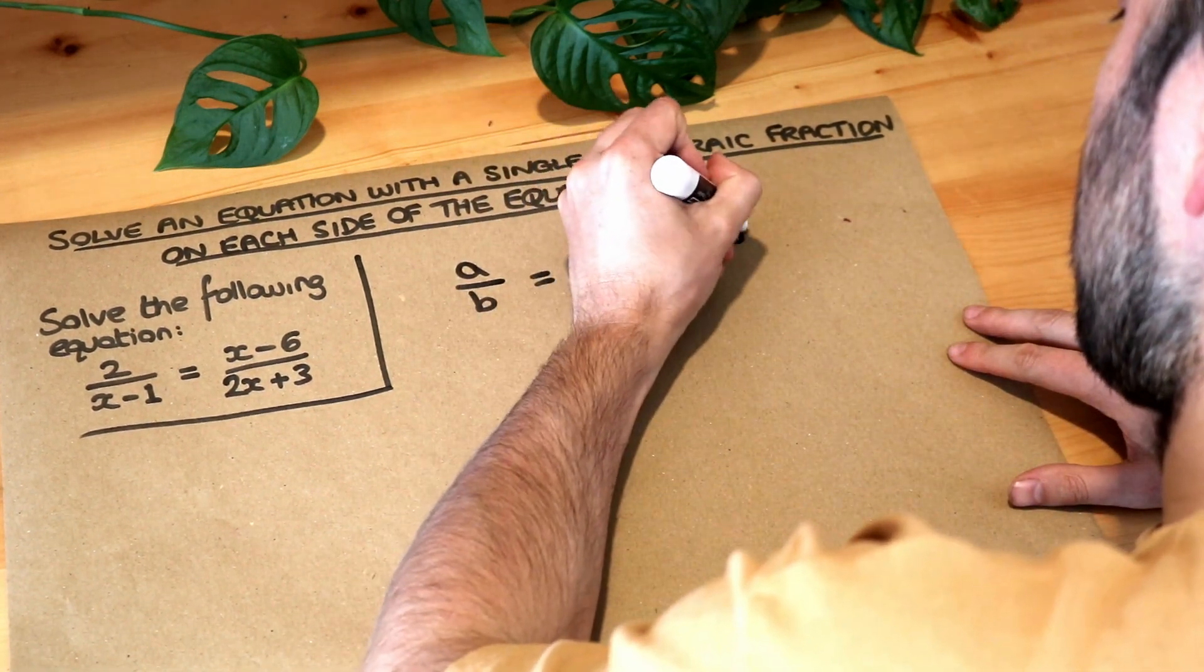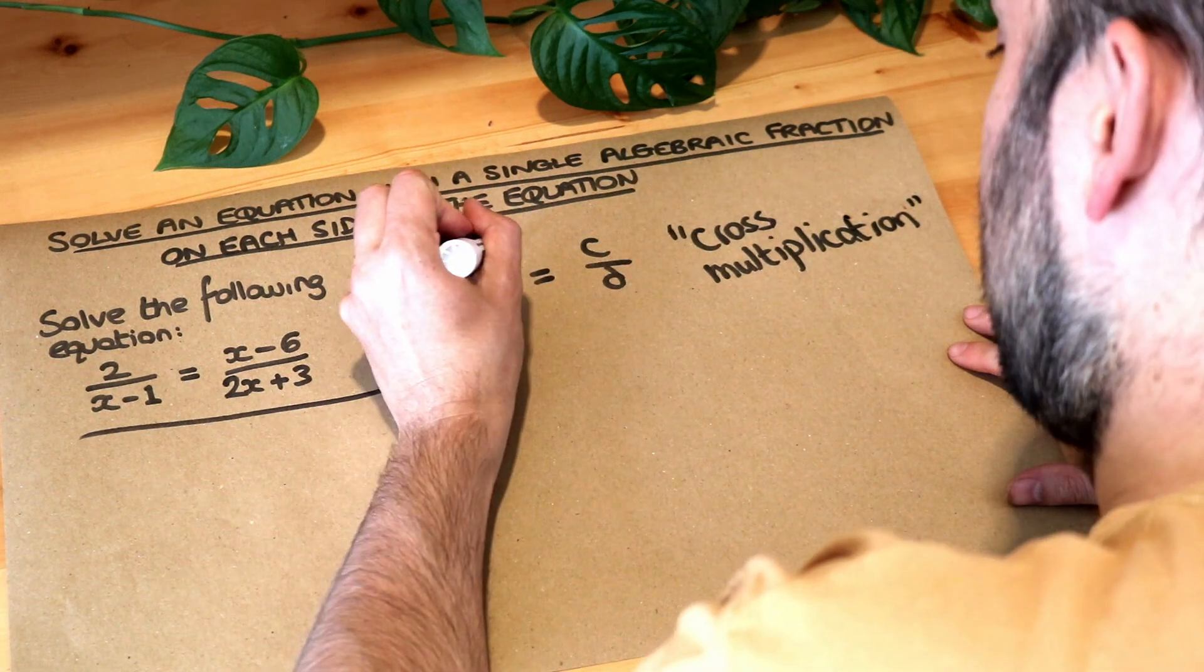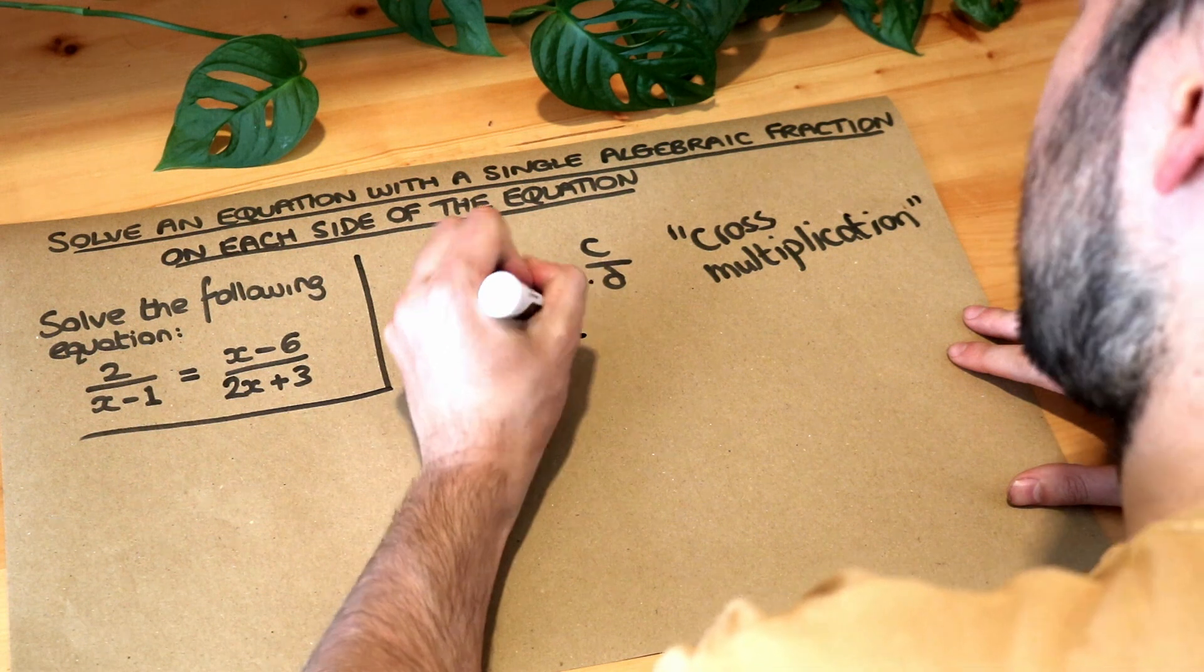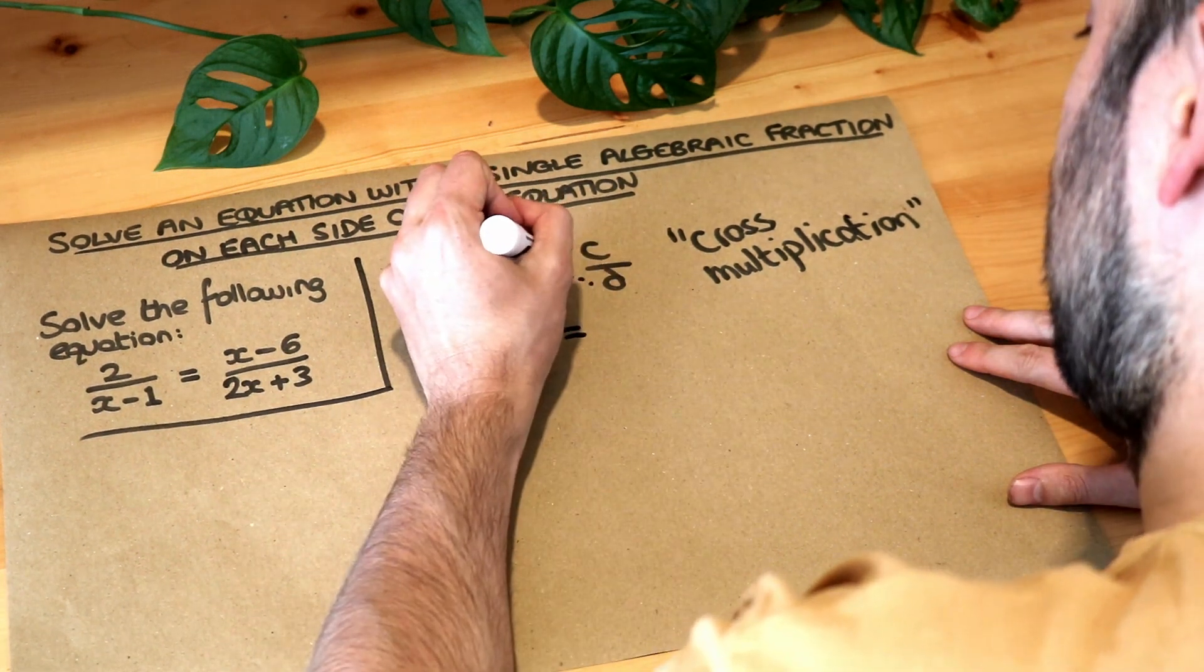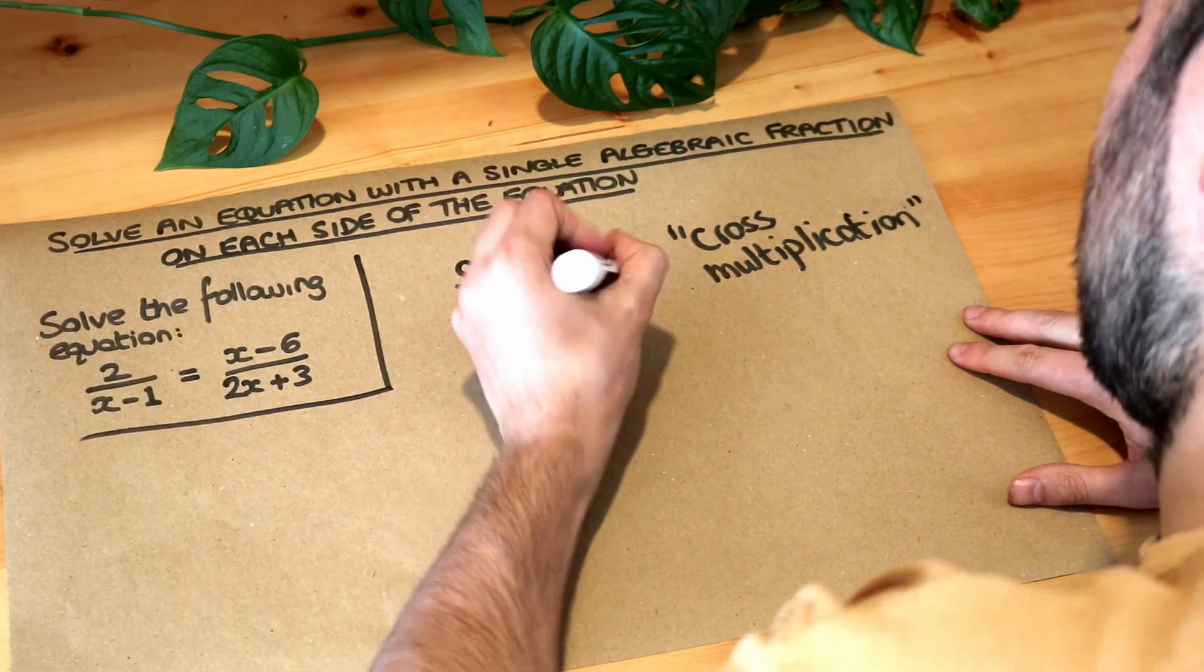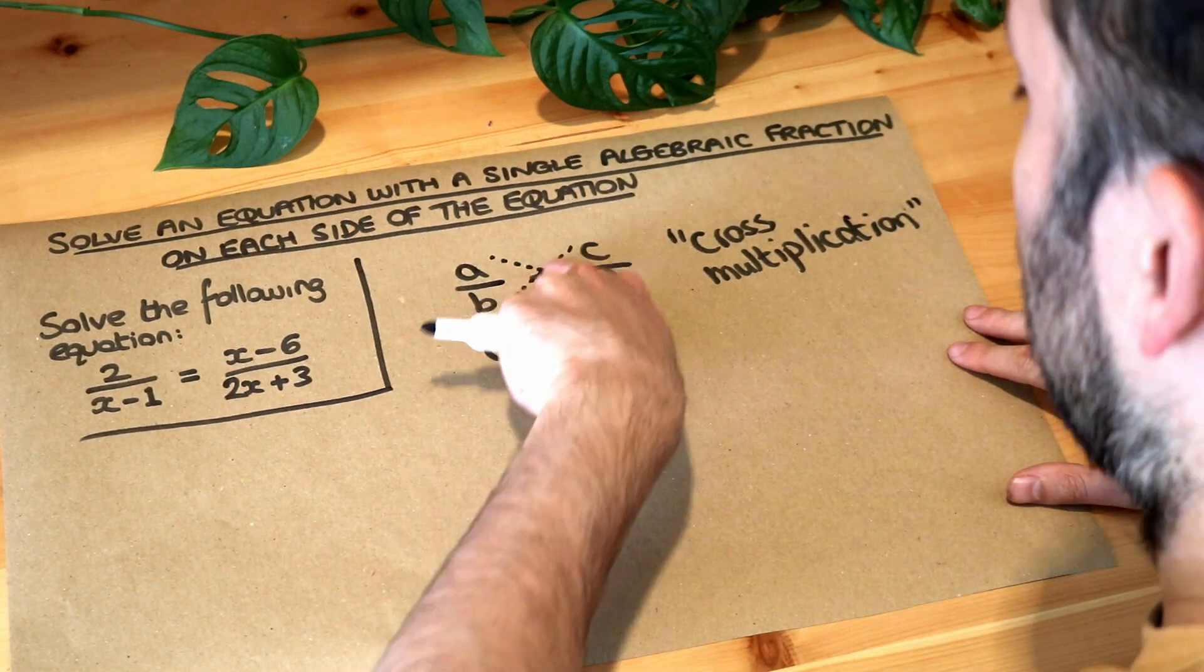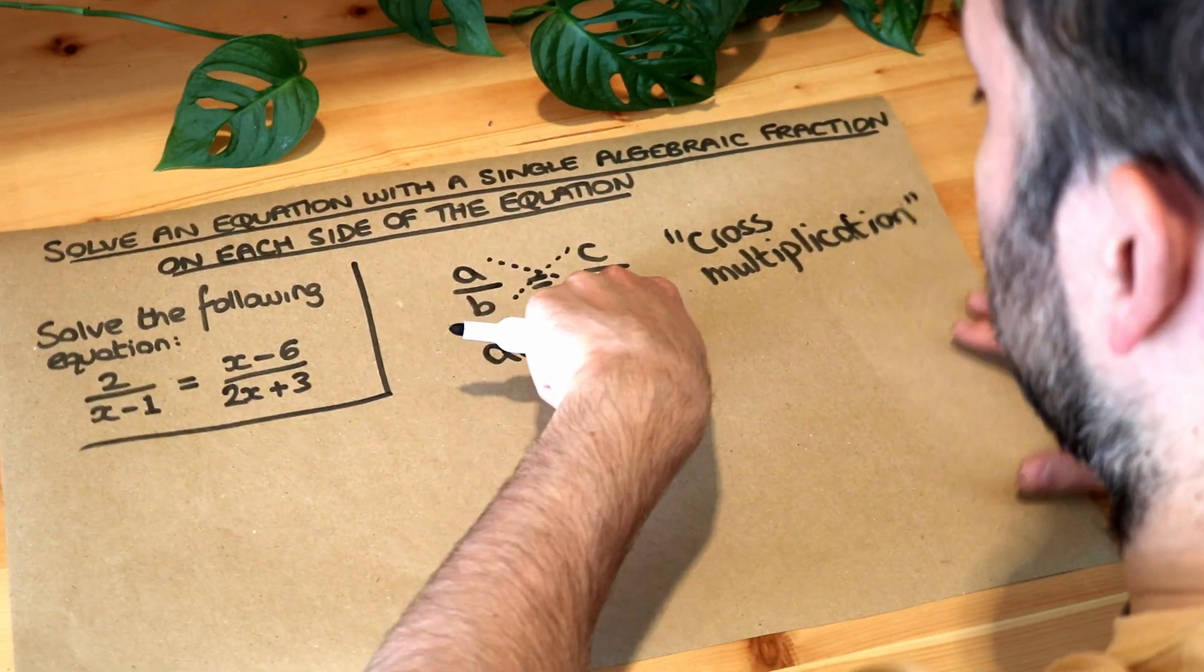And to do that you can just say that a times d is equal to b times c. That's known as cross multiplication because you can see you're multiplying in this cross like fashion, that's a cross shape.